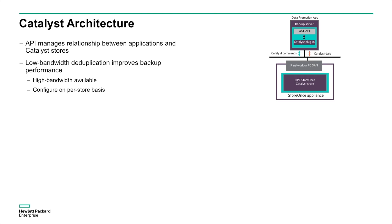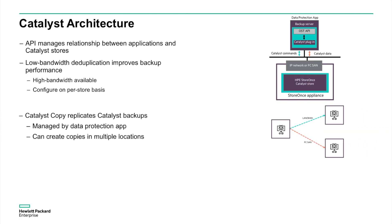Sending fewer chunks means that the backup takes less time to complete, making a dramatic improvement in job performance. Catalyst copy allows users to create copies of these backup jobs on remote StoreOnce devices to satisfy disaster recovery requirements. These jobs are low-bandwidth as well, improving performance in moving data off-site.